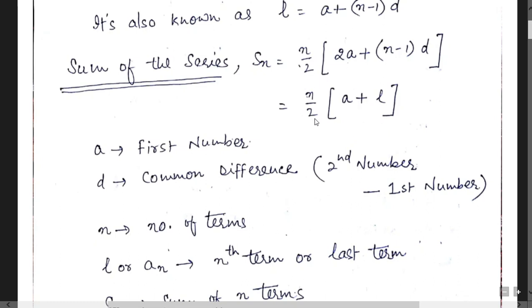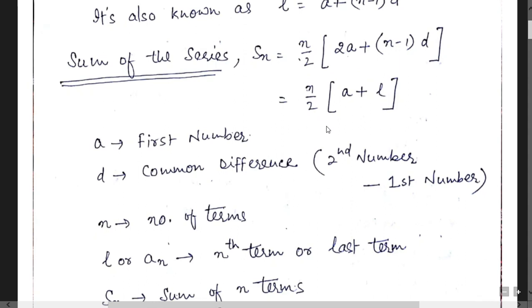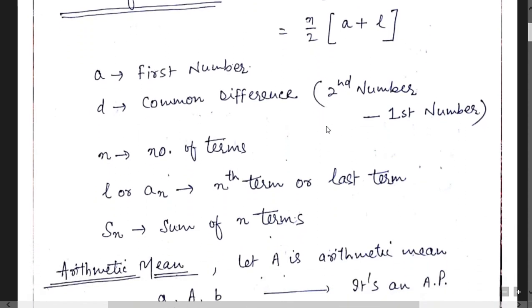The second sum formula is n over 2 times (a plus l). If we know the last term, the first term, and the number of terms, we can apply this formula. All the terms — what is the meaning of a, d, n, l, and S — have already been explained.